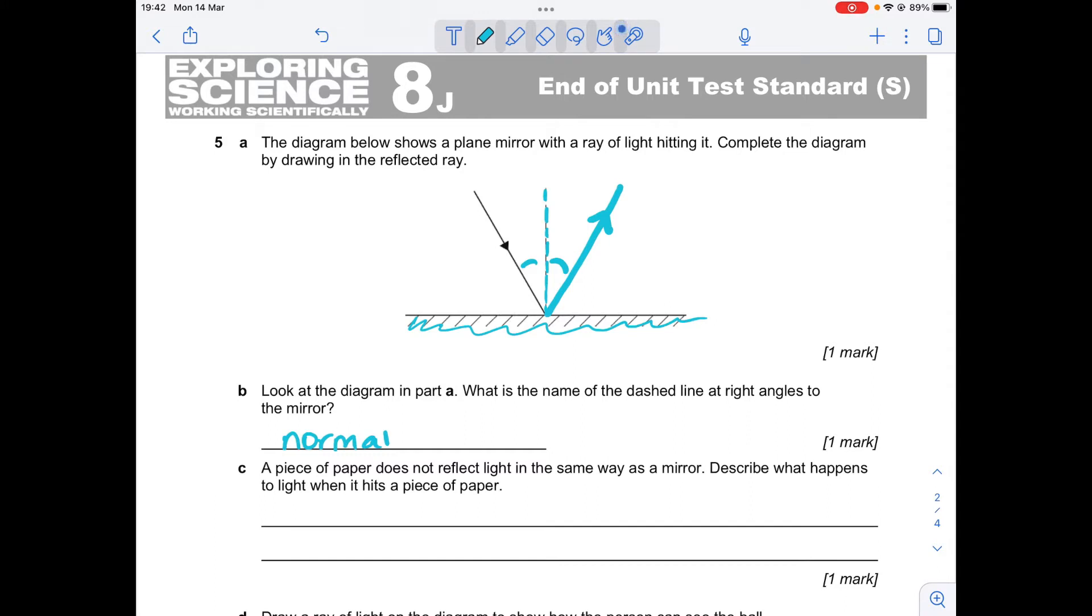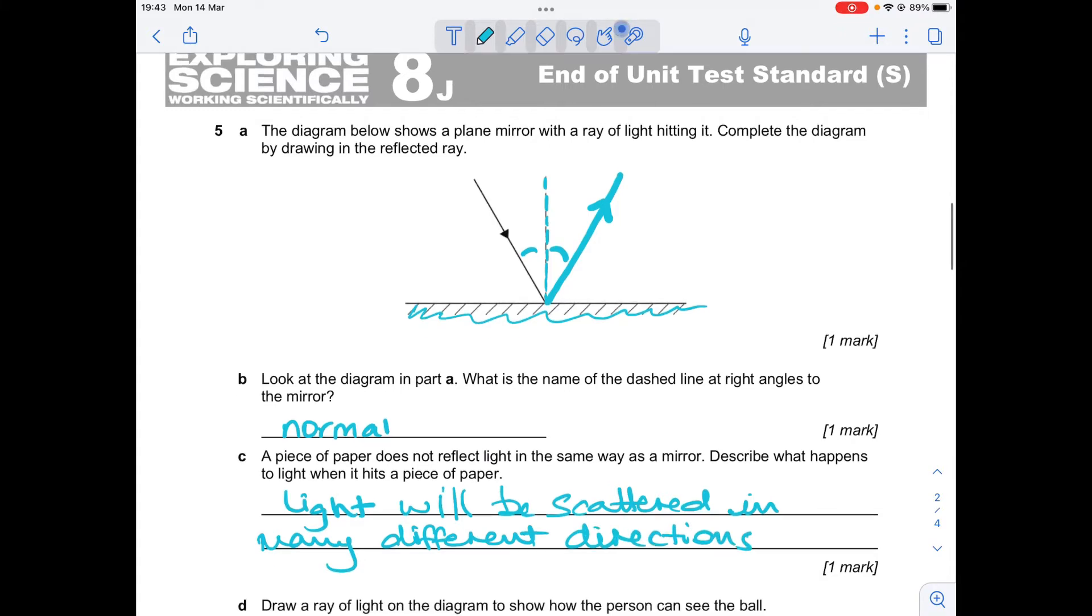A piece of paper does not reflect light in the same way as a mirror. Describe what happens to light when it hits the piece of paper. So because light is translucent, we'll go for that same keyword. Light will be scattered in many different directions.